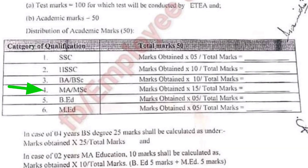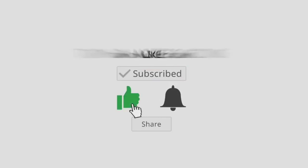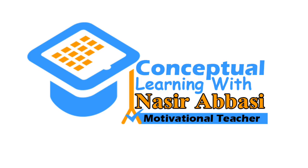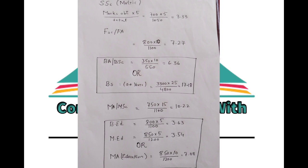اگر B.Ed کے بعد کسی subject میں - جیسے اردو، اسلامیات، انگلش میں - master کیا ہوا ہے اور ساتھ M.Ed education بھی کیا ہوا ہے تو M.Ed education کو 10 count کیا جائے گا۔ لیکن اگر صرف M.Ed education کیا ہوا ہے تو وہ eligible تو ہو جائے گا لیکن اس کے 20 marks count نہیں ہوں گے۔